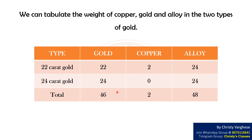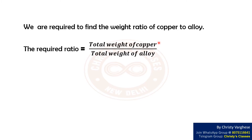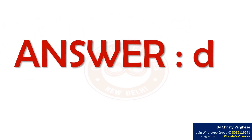One unit of the alloy contains 46 parts of gold and 2 parts of copper. We are required to find the weight ratio of copper to alloy. The required ratio equals total weight of copper divided by total weight of alloy, which equals 2/48, which in turn equals 1/24. Hence, the right answer to the question is option D.